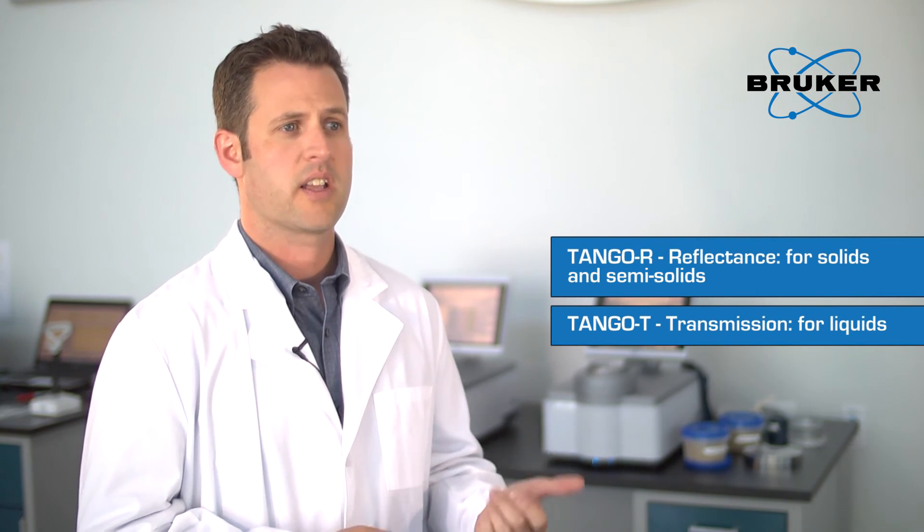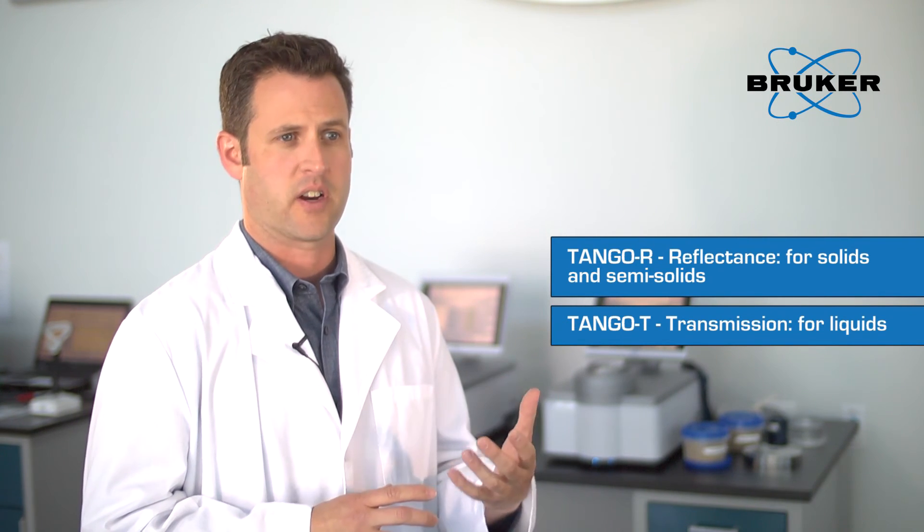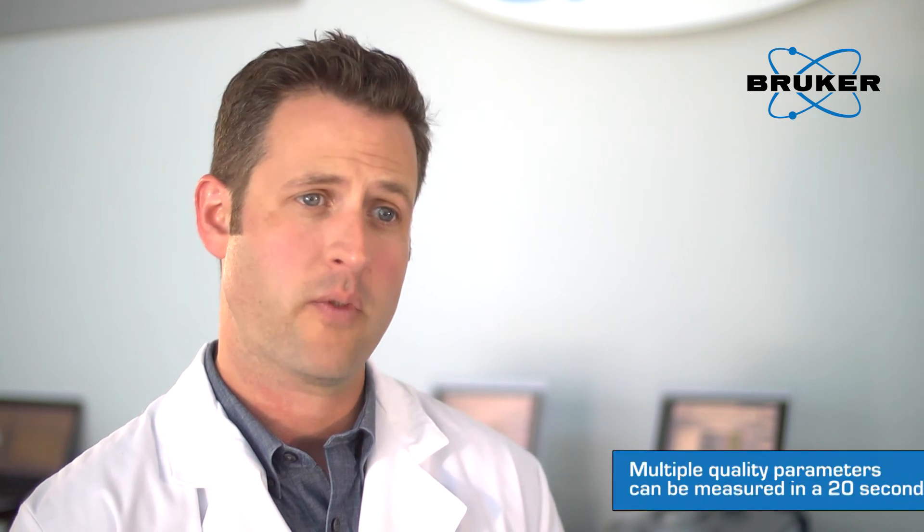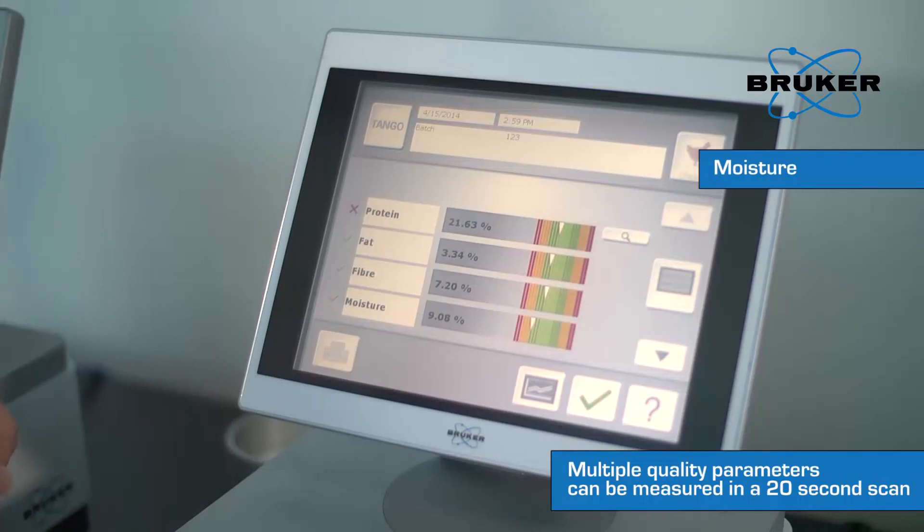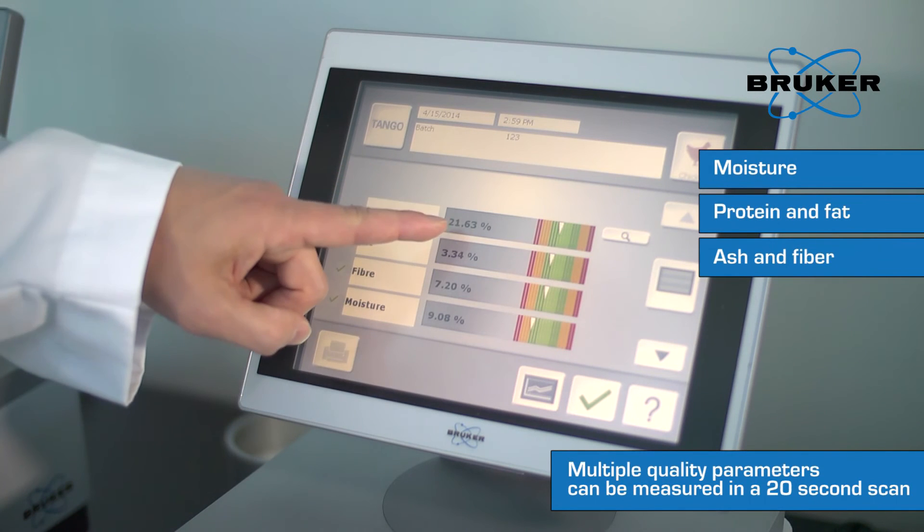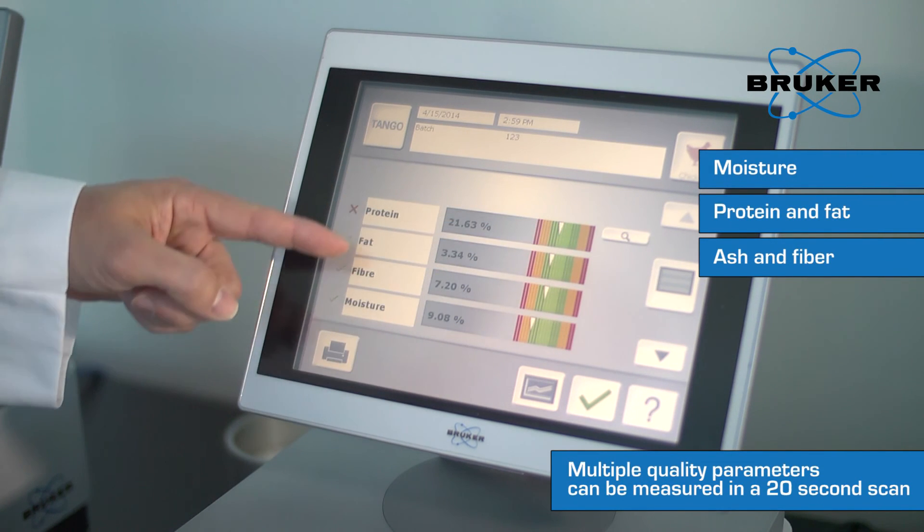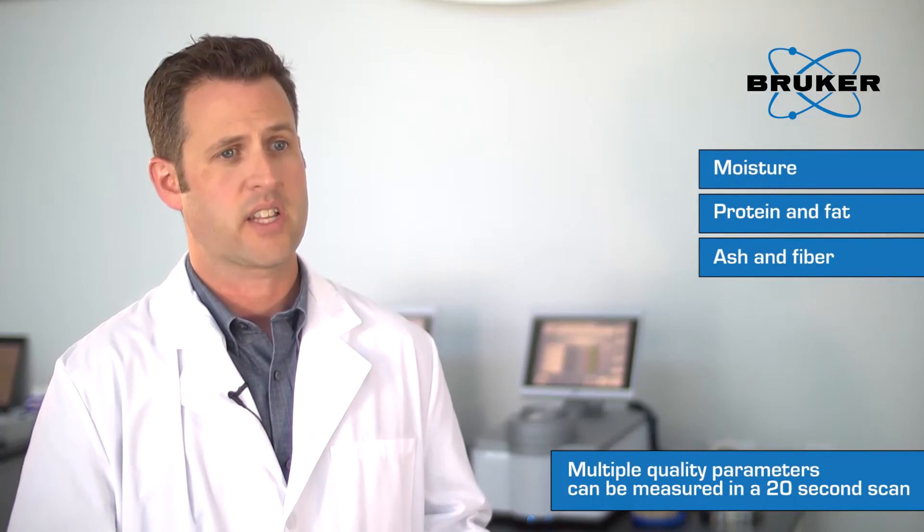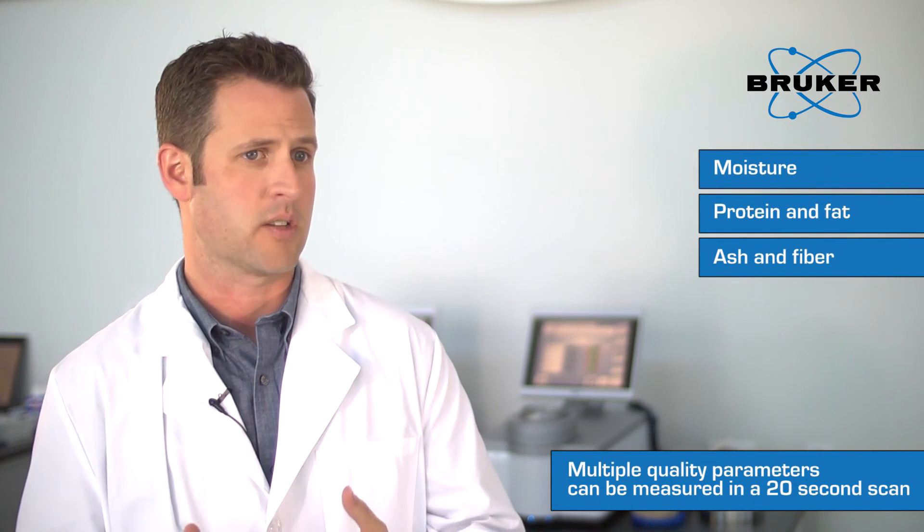The Tango R in reflectance uses the integrating sphere to analyze solids and semi-solid type materials. With the Tango R, you have the capability to analyze your materials in ground form or in small pellets. Due to the high accuracy of the Tango, calibrations can be developed on one Tango and transferred directly onto another Tango system or another Bruker FT-NIR system.